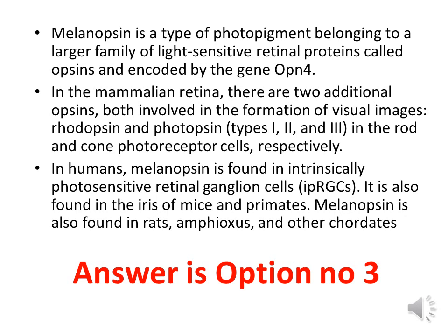Melanopsin is also present in the iris of mice and primates, and in rats, amphioxus, and caudates. In rods and cones, rhodopsin and photopsin are the pigments present respectively.